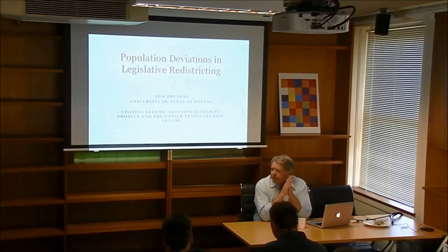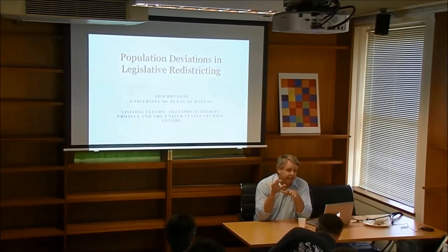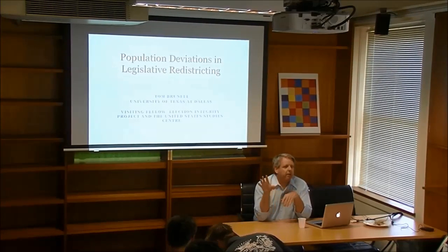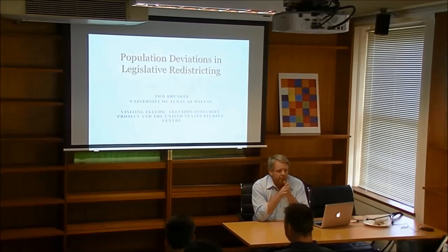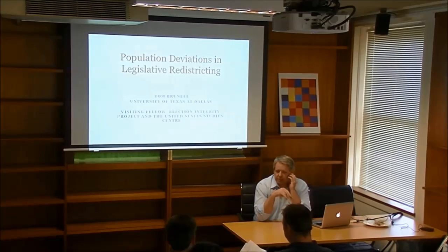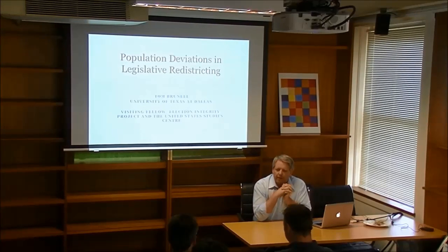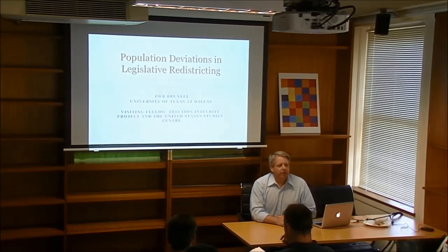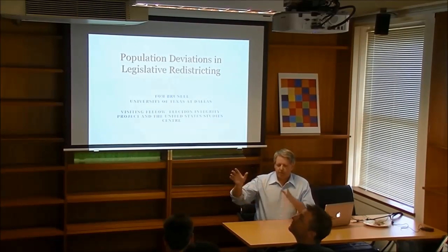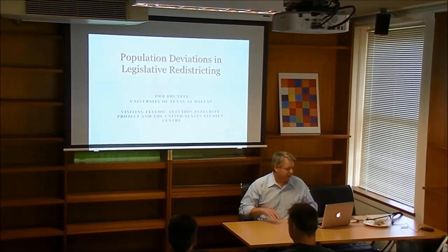Typically when somebody mentions redistricting, you think of the U.S. House of Representatives, but here I'm talking about legislative districting. All 50 states basically mimic the federal government in having three branches. They all elect single executives called governors and have state judiciaries. For the legislature, 49 of the 50 states have a bicameral state legislature. Nebraska is the one outlier — they have a unicameral, nominally nonpartisan legislature, though it's not really nonpartisan at all. If you're a Republican, you don't say you're a Republican, but all your symbols are red, and they all vote together as well.